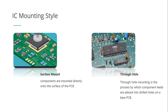Integrated circuits can also be classified according to how they are mounted on a circuit board. If the IC is mounted directly on the surface of a printed circuit board and soldered on top, we call that surface mount.